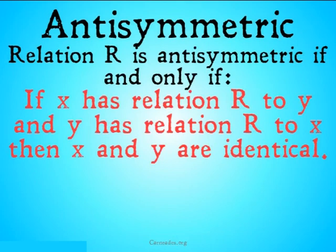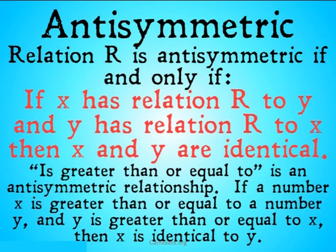Antisymmetric is a really interesting one. Relation R is antisymmetric if and only if: if relation R is had by X to Y, and Y has relation R to X, then X and Y are identical. 'Is greater than or equal to' is an example of an antisymmetric relationship. If a number X is greater than or equal to a number Y, and Y is greater than or equal to X, then X must be identical to Y. Both numbers can't be greater than the other, so the only thing they can be is equal — they must be identical. This is an important relationship as we move forward into Mariology.